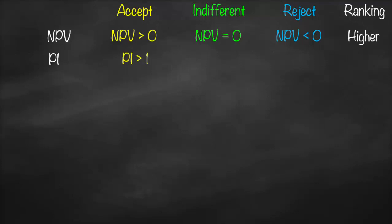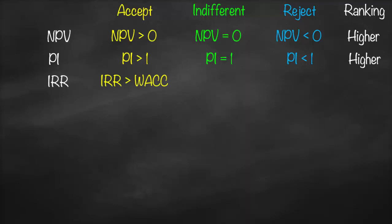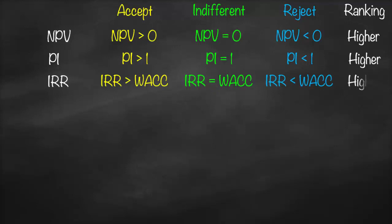Our second capital budgeting tool is the Profitability Index (PI). We accept if PI is greater than one, we are indifferent if PI equals one, and we reject if PI is lower than one. For mutually exclusive projects, we choose the higher PI. Then we have Internal Rate of Return (IRR): accept if IRR is greater than WACC, indifferent if IRR equals WACC, reject if IRR is lower than WACC. The ranking criteria is the higher IRR.